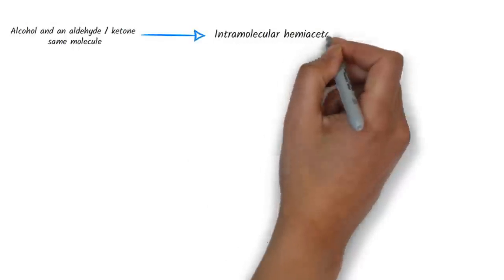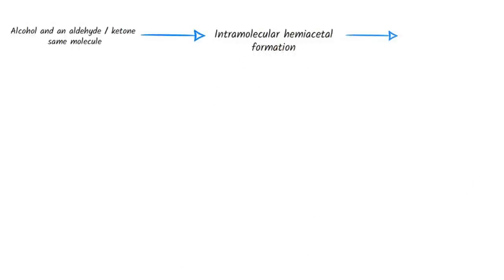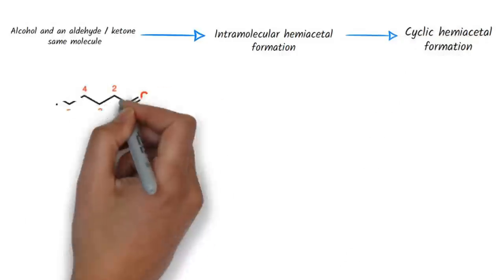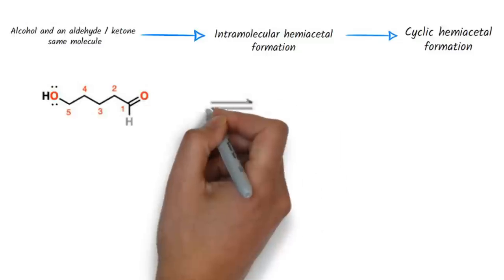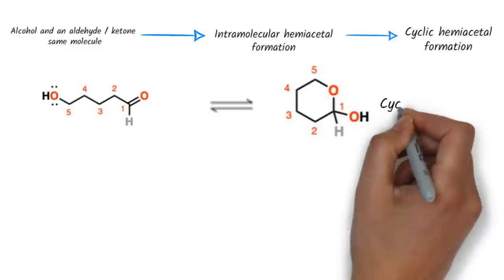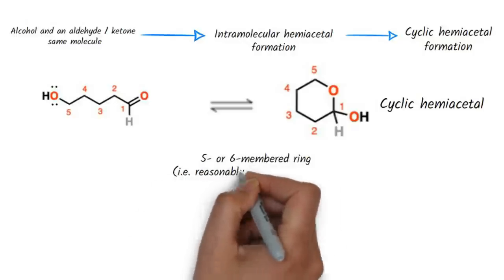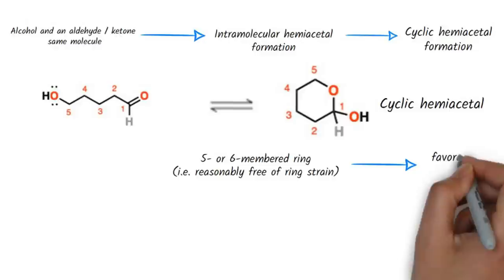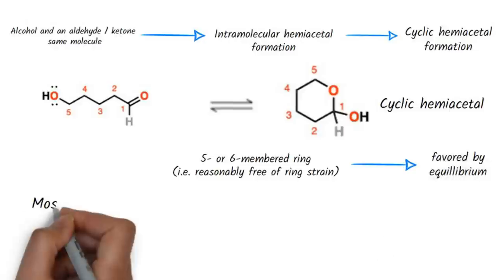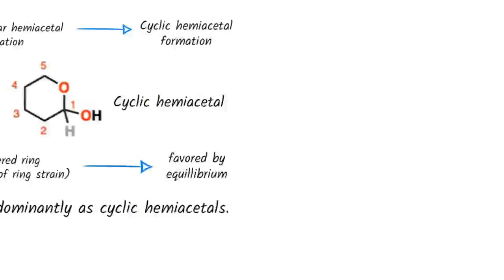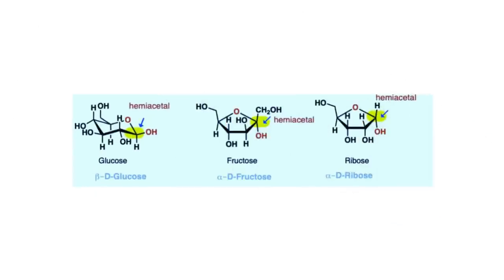If an alcohol and an aldehyde or ketone are present on the same molecule, there is always the possibility of intramolecular hemiacetal formation to form a cyclic hemiacetal. For example, this 5-hydroxypentanal will lead to formation of a cyclic hemiacetal under acidic, basic, or neutral conditions. Unlike acyclic hemiacetals, if the intramolecular reaction leads to form a 5- or 6-membered ring that is reasonably free of ring strain, equilibrium will generally favor the cyclic form. Most simple carbohydrates exist predominantly as cyclic hemiacetals. In water at 25 degrees Celsius, a solution of glucose contains less than 1% of the open chain form at any given time.